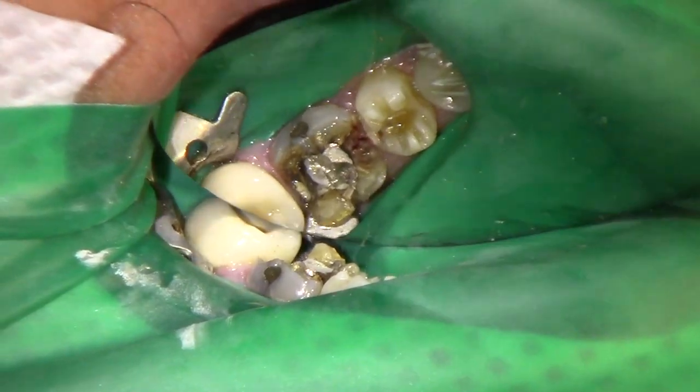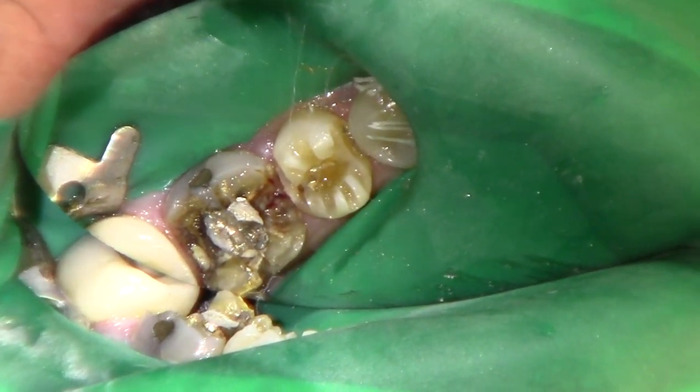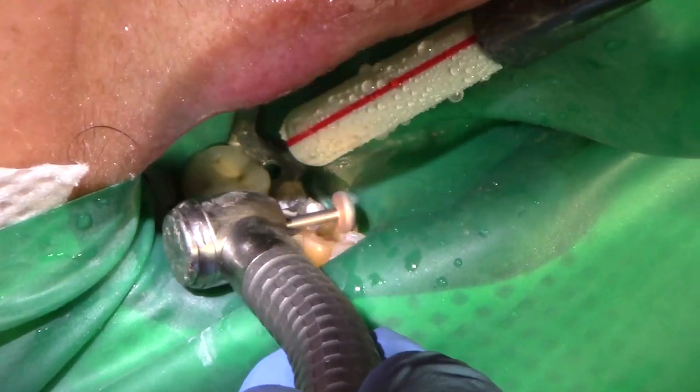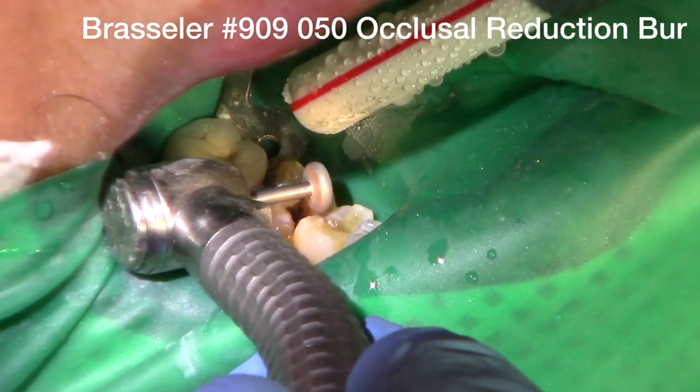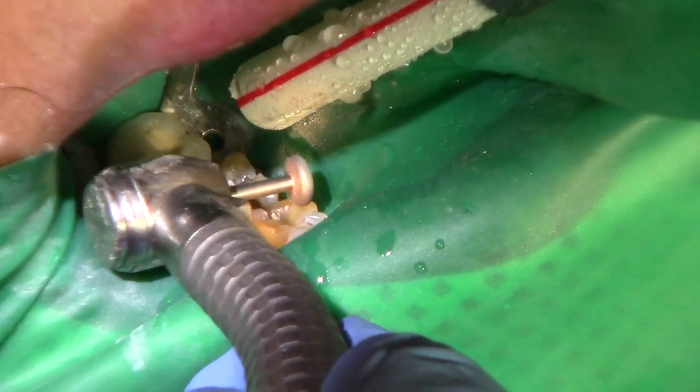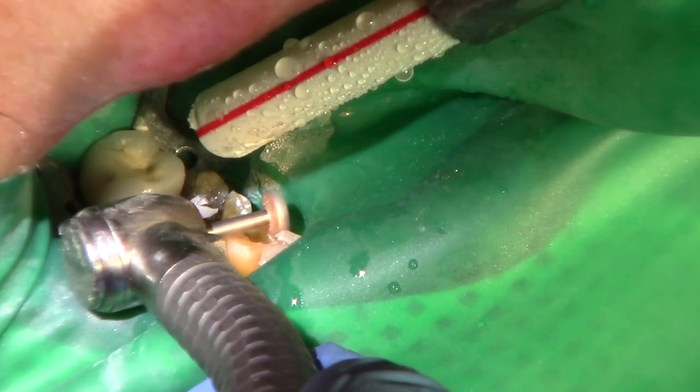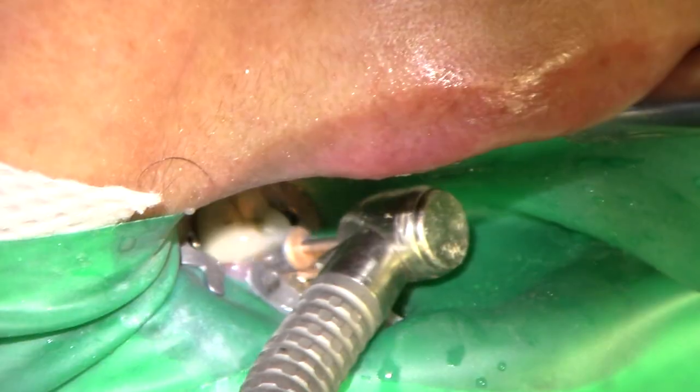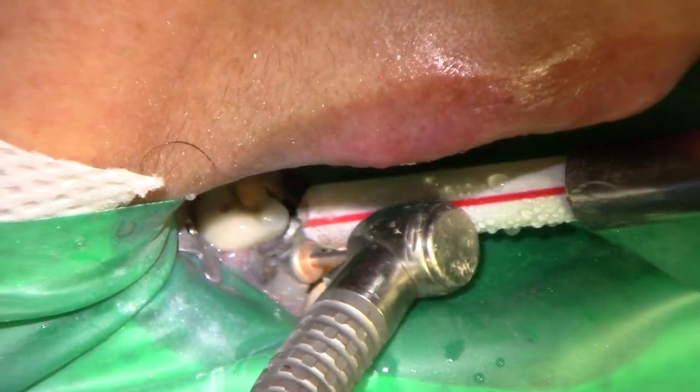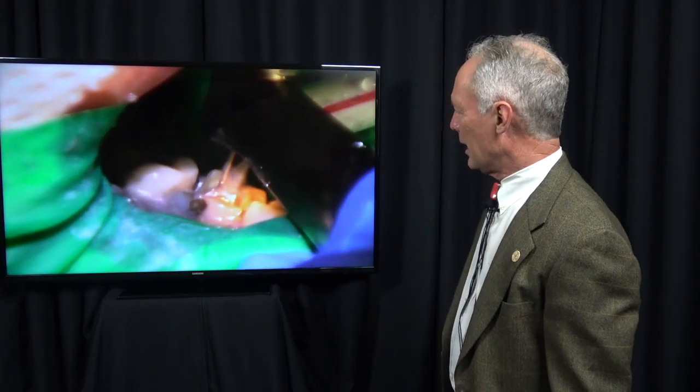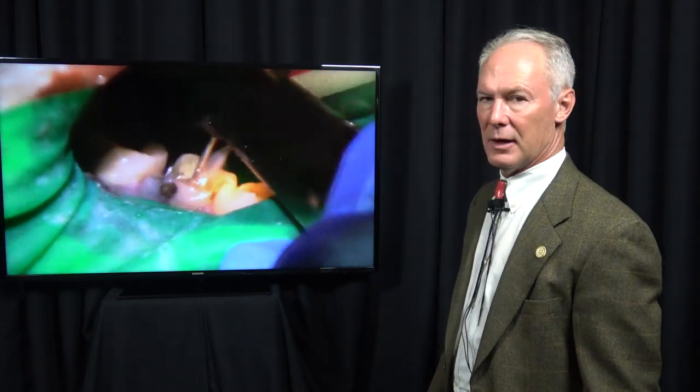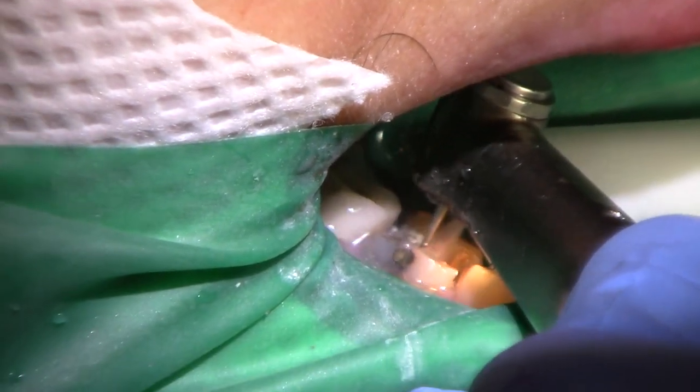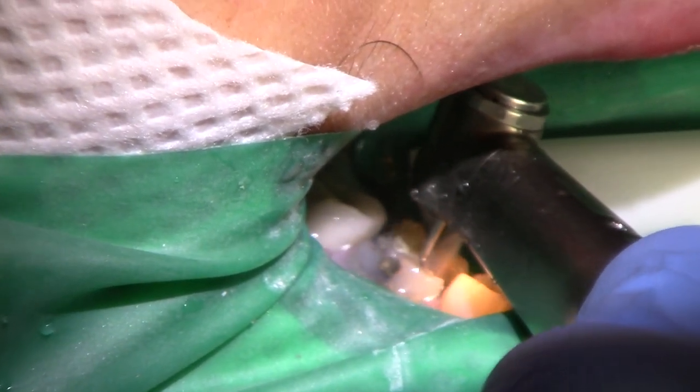Most of the cut was into the gold crown. You can see all the decay on that molar tooth. Now I'm just completing my occlusal reduction with the occlusal reduction burr, and I want about a millimeter and a half of occlusal clearance. Since there was decay under the crown, I want to remove all the old amalgam filling.